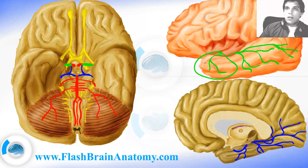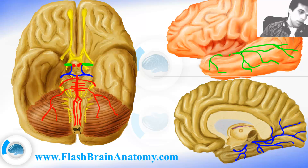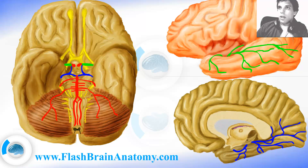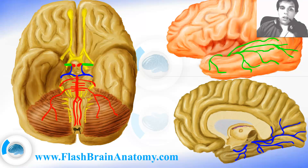To recap the inferior ones: we have the anterior temporal branch, the middle temporal branch, and the posterior temporal branch. There is also an artery of the angular gyrus — the angular gyrus branch. And we also have the anterior parietal artery.